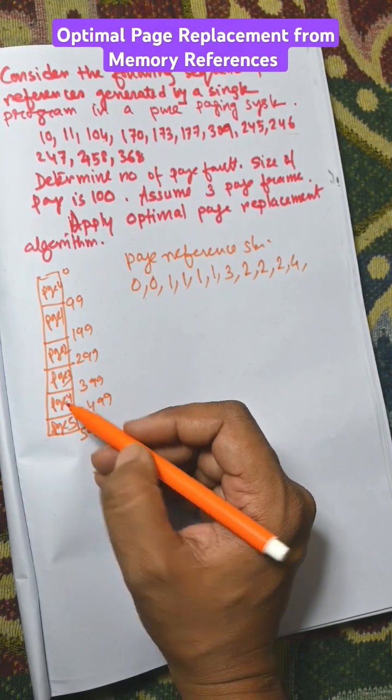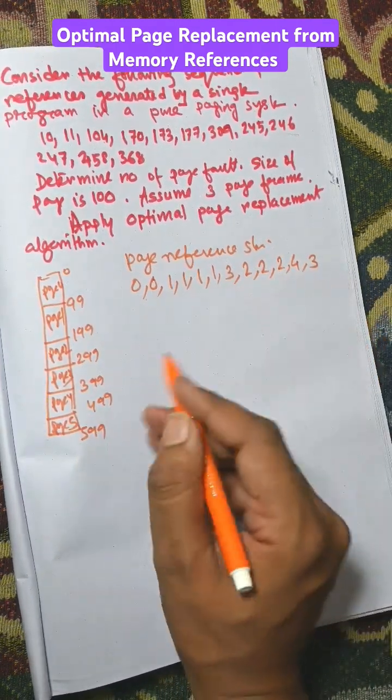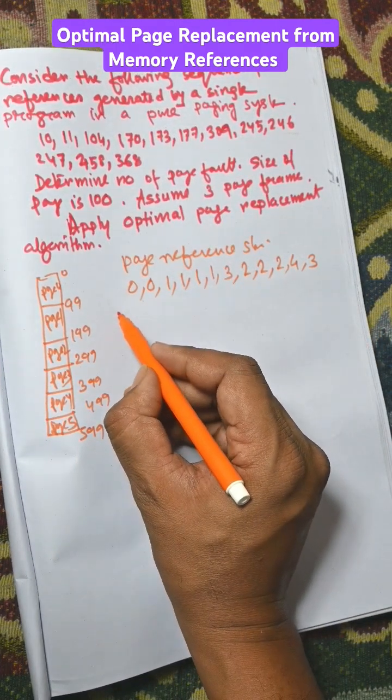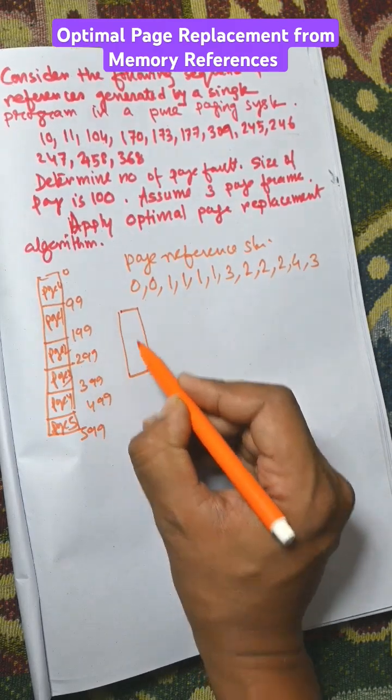368 available in page 3. So these are page references. Now you need to apply optimal page replacement algorithm.